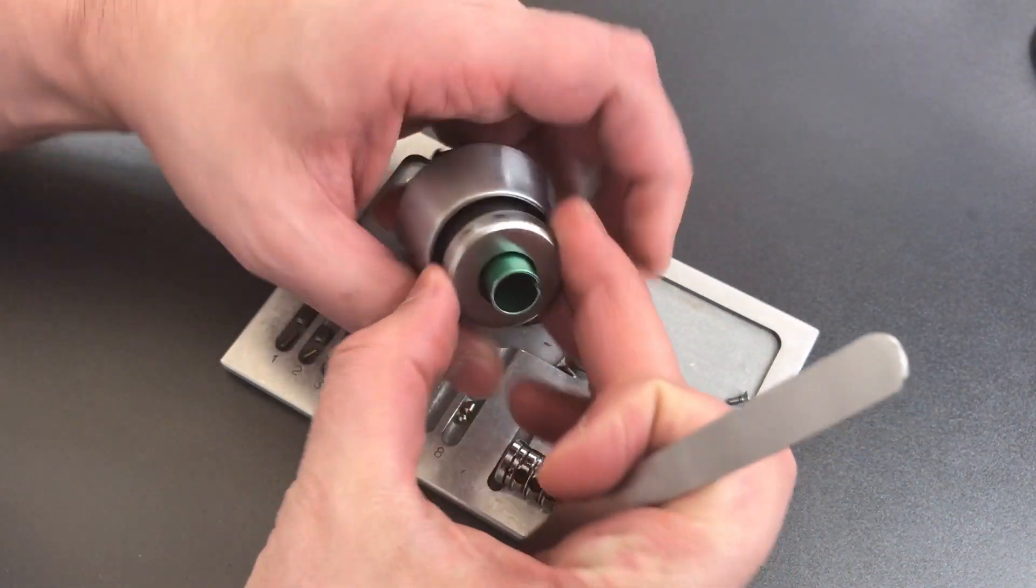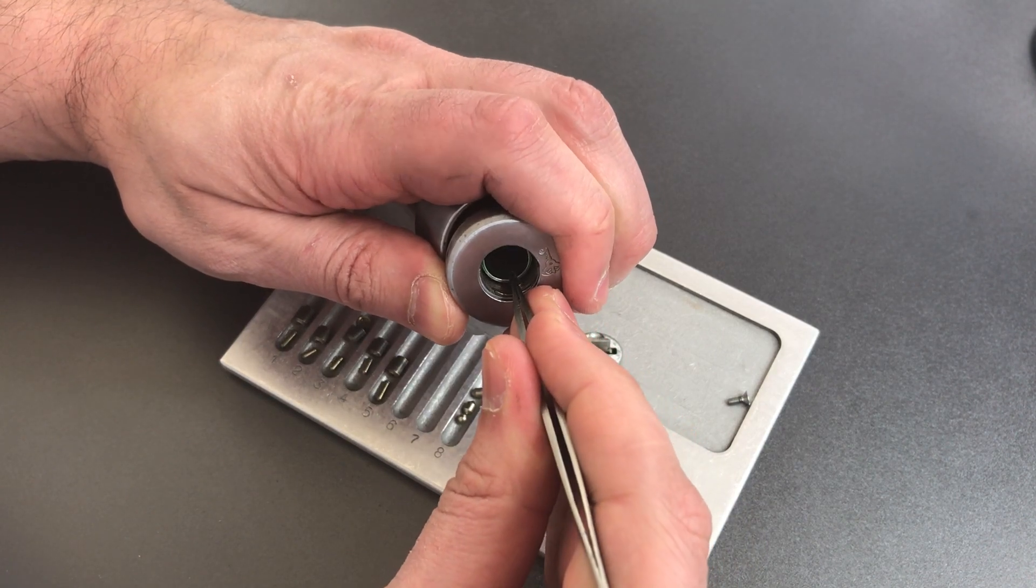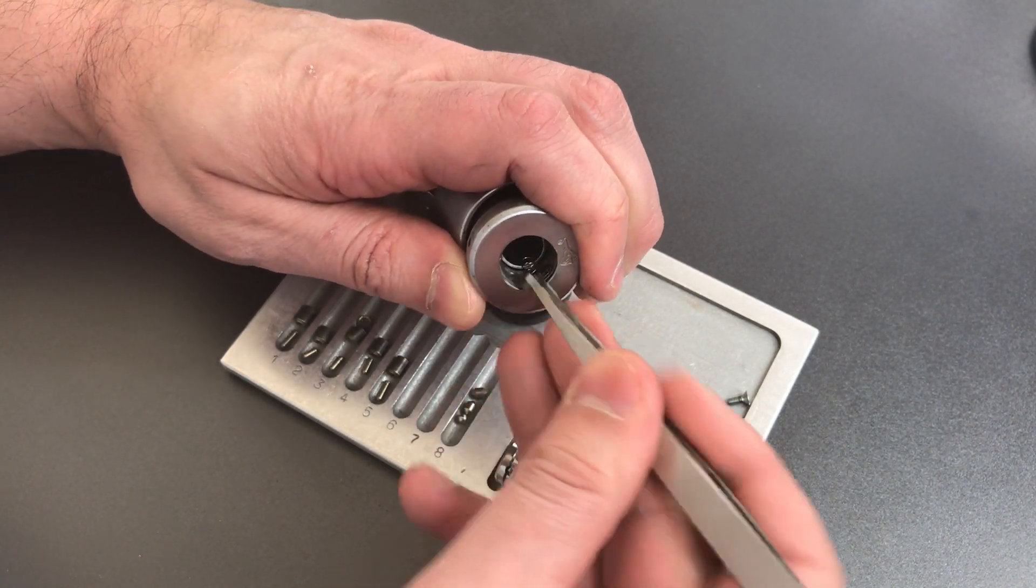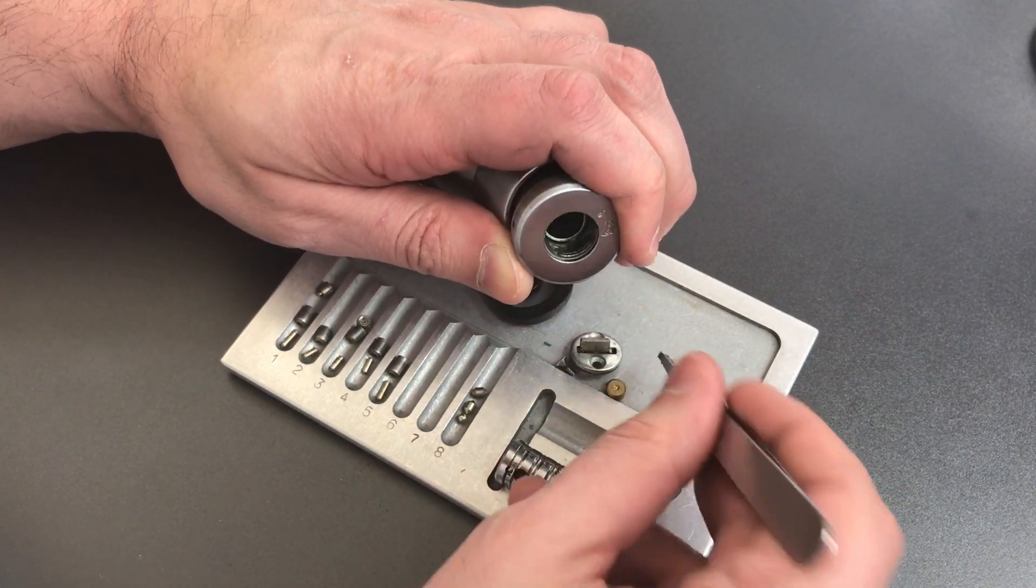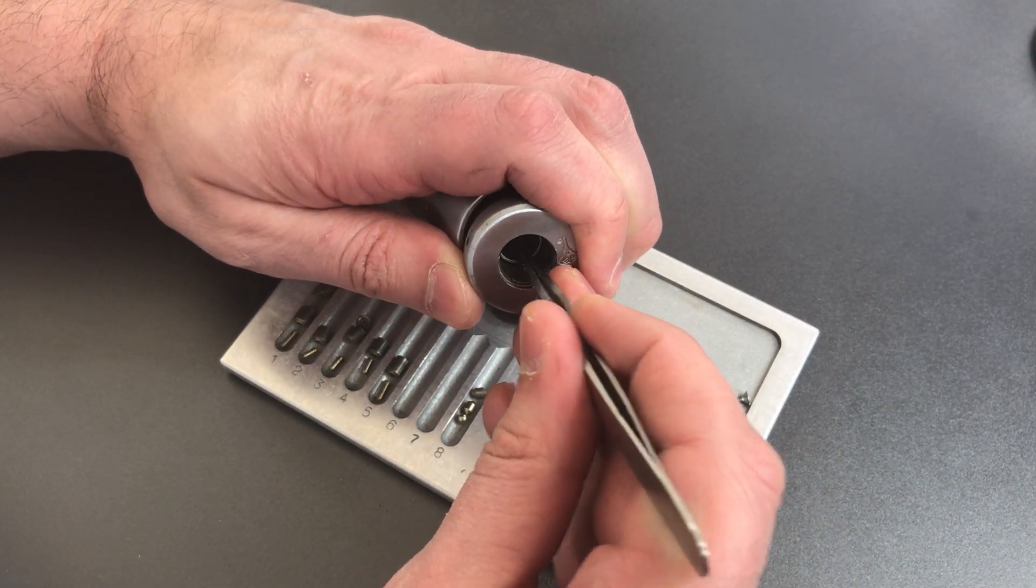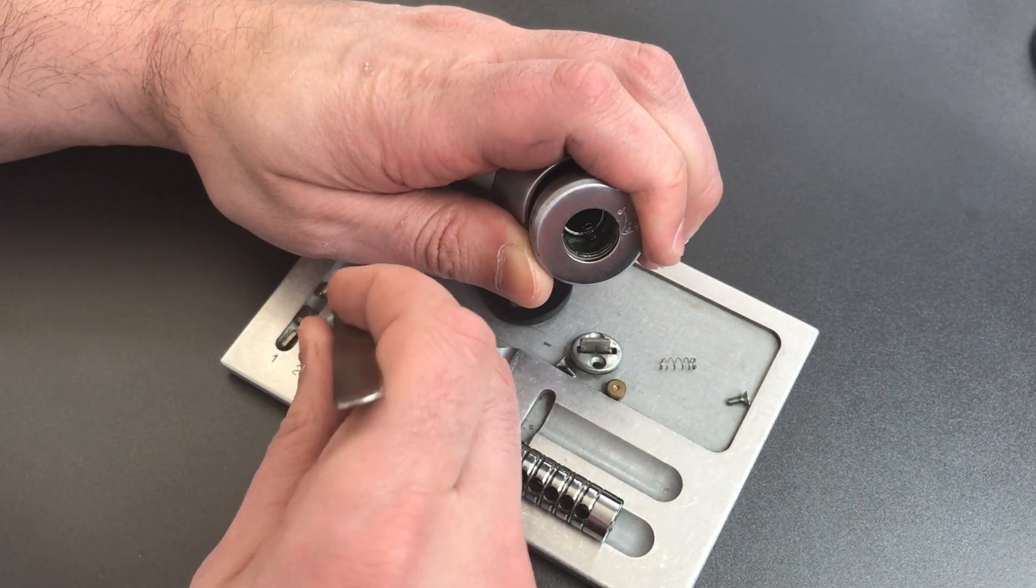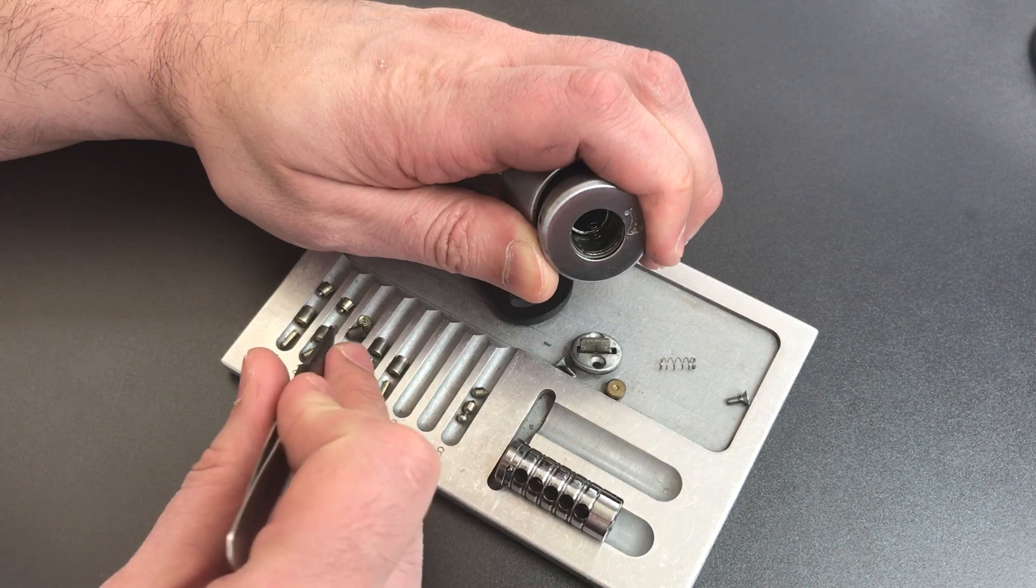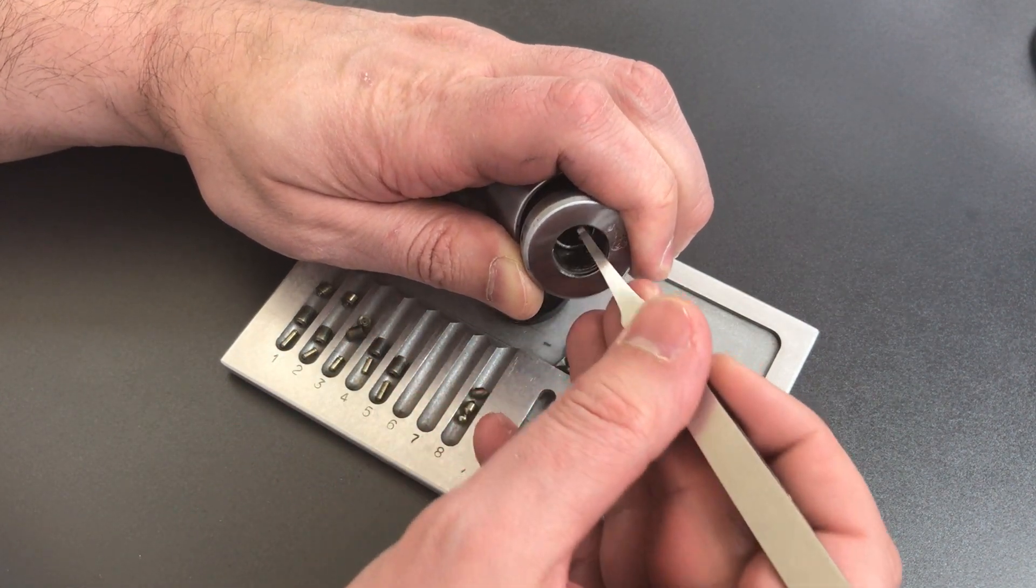Let's get these driver pins out now. As anticipated, we do have a small version of the driver pin in there. Looks like the same one that you would find in their furniture locks. That one has a spooled inner pin and a standard outer. On number two, we have a mushroom outer pin and a spooled inner pin.